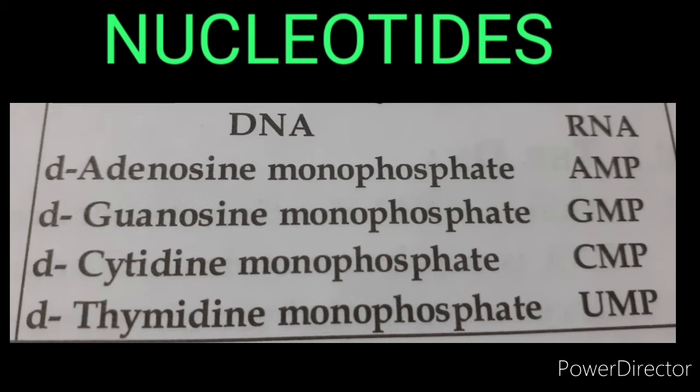The nucleotides present in RNA are: adenosine monophosphate, guanosine monophosphate, uridine monophosphate, and cytidine monophosphate, also called cytidylic acid.